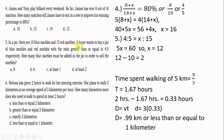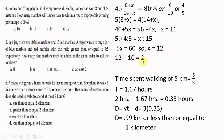Number five: in a jar there are 10 blue marbles and 15 red marbles. A buyer wants a ratio of blue to red greater than or equal to 4:5. How many blue marbles are needed? Set up the proportion: x over 15 equals 4 over 5. Multiply: 5x equals 60, so x equals 12. Since there are only 10, we need 12 minus 10 equals 2 more blue marbles.